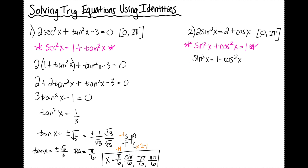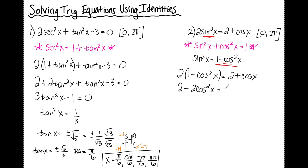In my original equation, I replace sine squared x with 1 minus cosine squared, giving me 2 times (1 minus cosine squared) equals 2 plus cosine x. I distribute the 2 to get 2 minus 2 cosine squared x equals 2 plus cosine x. Since I have a cosine squared and a cosine x on both sides, I move everything over to set the equation equal to 0. The 2 minus 2 cancels, leaving 2 cosine squared x plus cosine x equals 0.